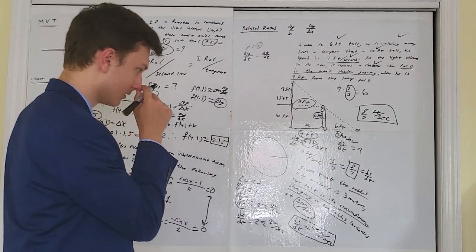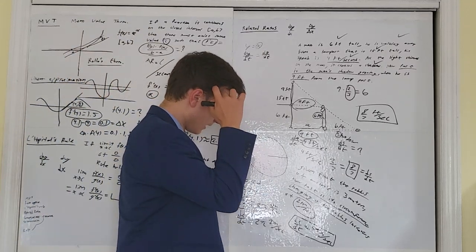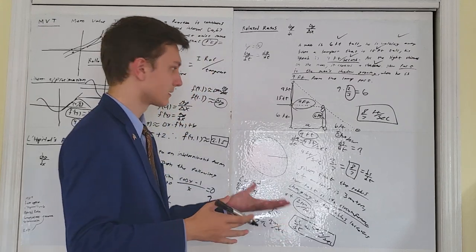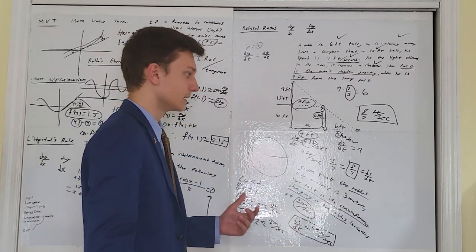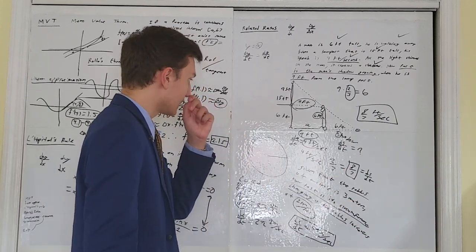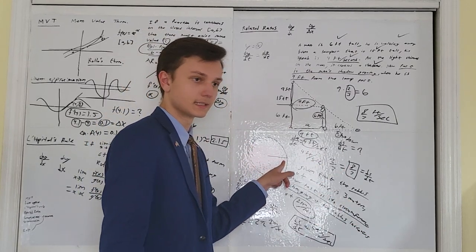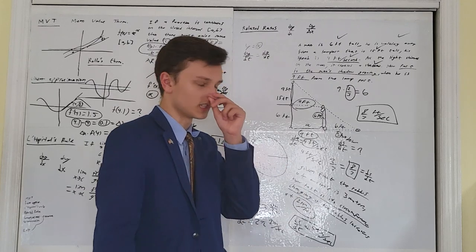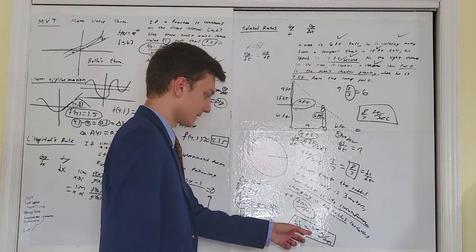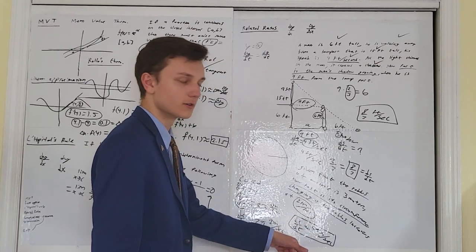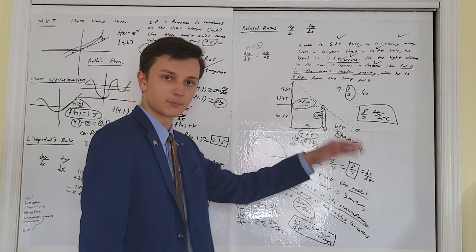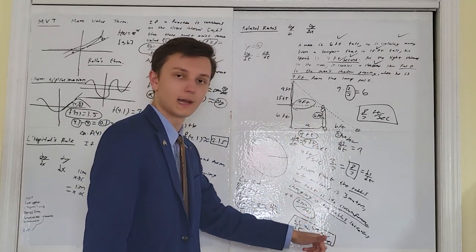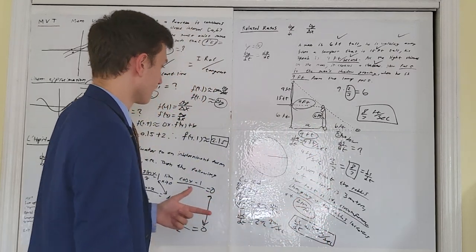Don't forget your units. Distance — radius, circumference — is measured in meters. Any rate of change of that distance is in meters per second, or meters per whatever time unit is given. If you take the derivative again, it would be meters per second squared. As you keep taking derivatives, the order of the time unit increases.